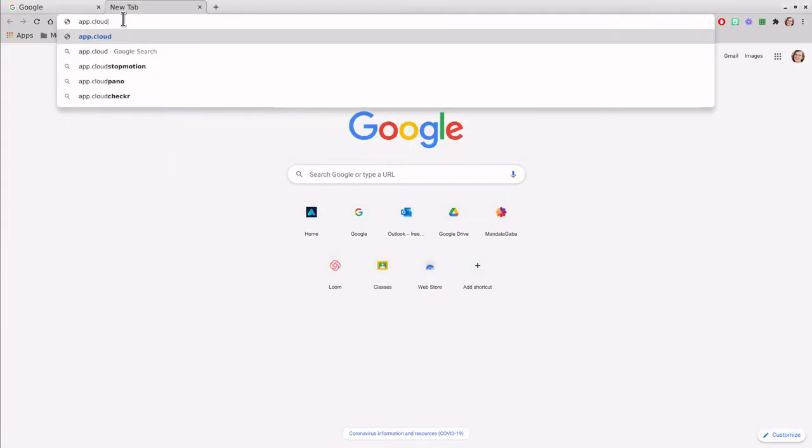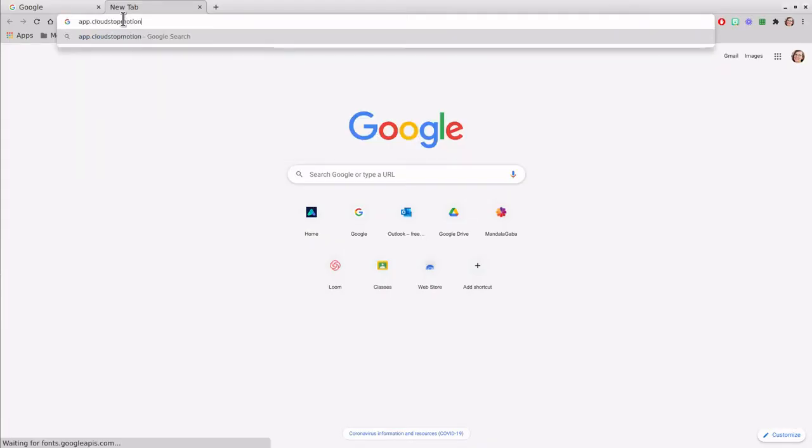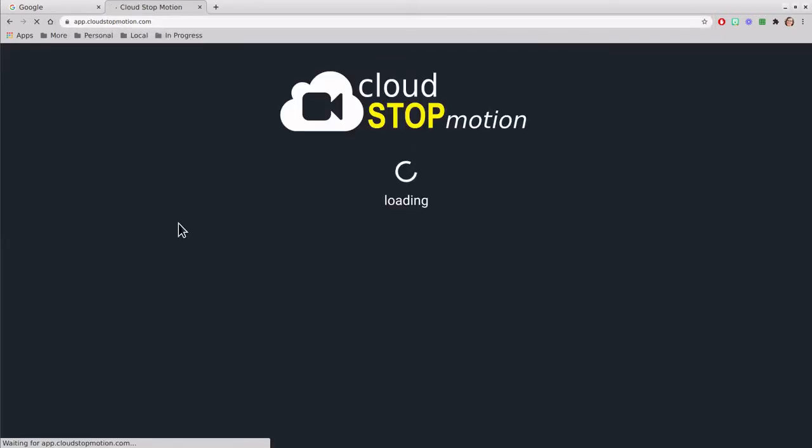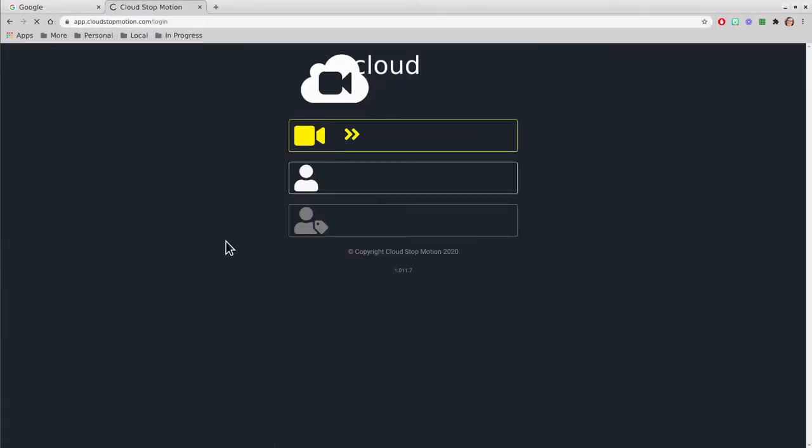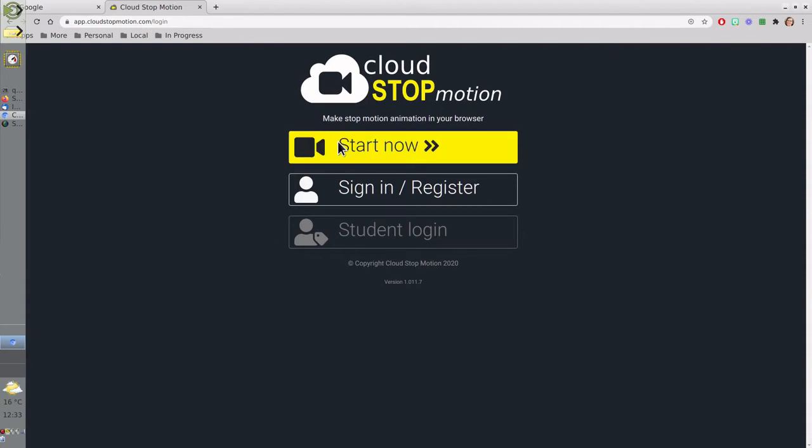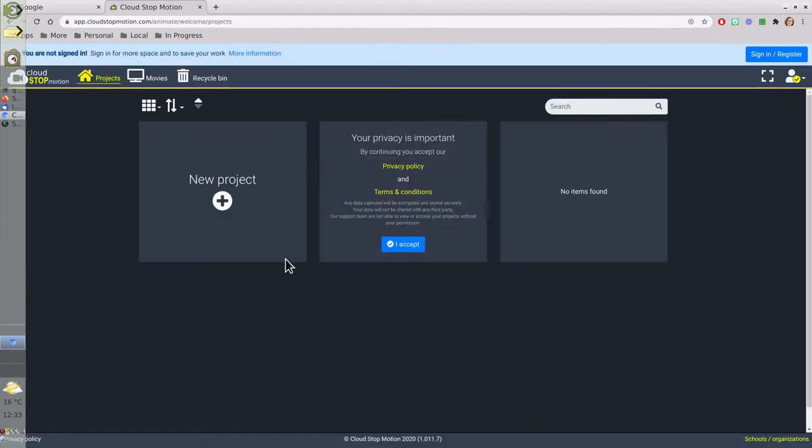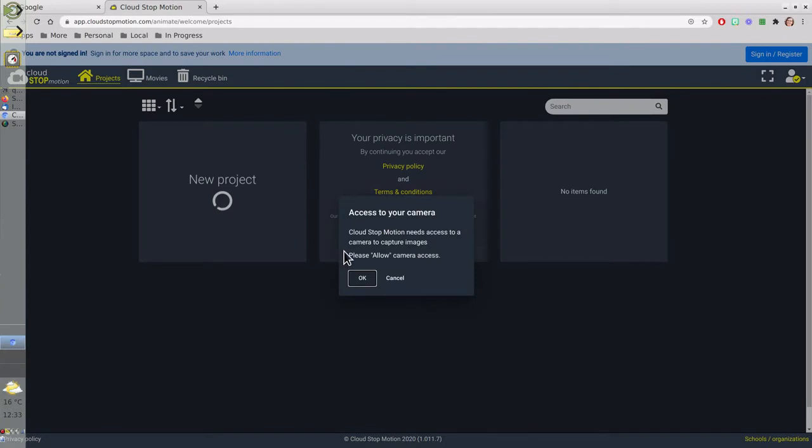You're going to go to app.cloudstopmotion.com. I put a link in the description for you. Then click start now. It says we're not signed in, that's okay we don't have to sign in. Click new project and then we're going to allow it to use our camera.